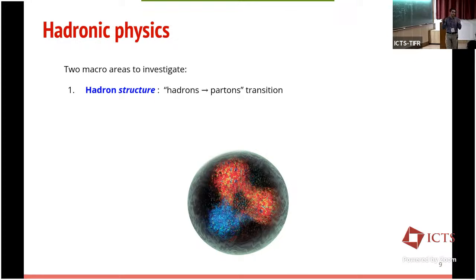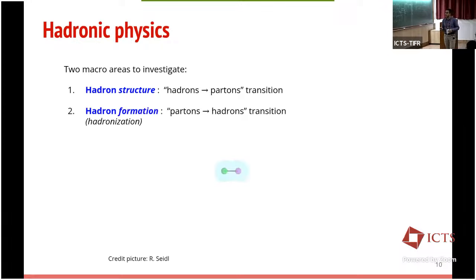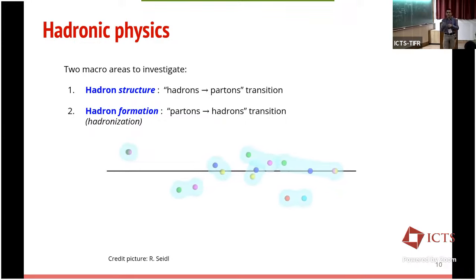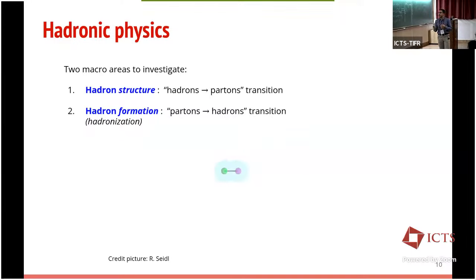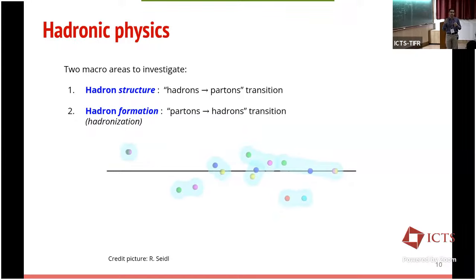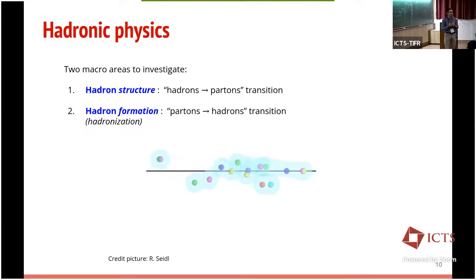When we talk about hadron physics there are two macro areas: the structure of hadrons — how quarks and gluons are distributed inside hadrons — and hadronization, the mechanism by which a struck quark interacts with the vacuum to create colorless hadrons. These are two sides of the confinement mechanism. One of the open questions is whether we can really link PDFs and fragmentation functions to confinement properties — there are ideas but no specific answers.